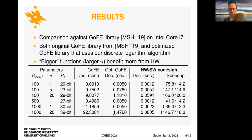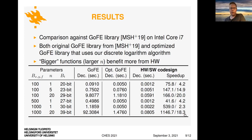With the new discrete logarithm algorithm, we get significant speedups, but by using the hardware accelerator we get even much better speedups — over 1000 times compared to original GoFe, and almost 20 times even against the optimized one. The bigger the functions are, the more benefit you get from the hardware accelerator. That's a good showcase of the importance of hardware acceleration for practical use cases, because in those cases the functions usually are on the larger end.